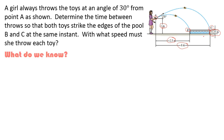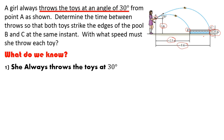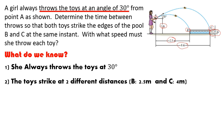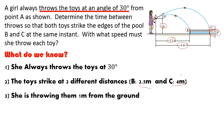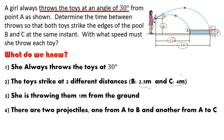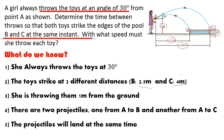So from that, what do we know? Number one, she always throws the toys at a consistent 30-degree angle. The toys strike at two different distances: 2.5 meters and 4 meters. She's throwing them one meter from the ground. There are two projectiles, one from A to B and another from A to C. And the last thing we know is that the projectiles will land at the same time. We keep these five points in mind as we reason through this problem before going through the math.